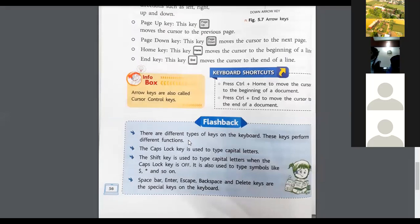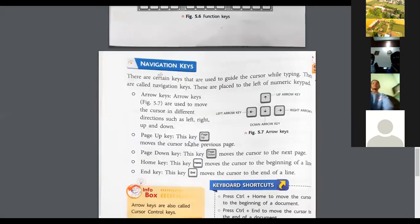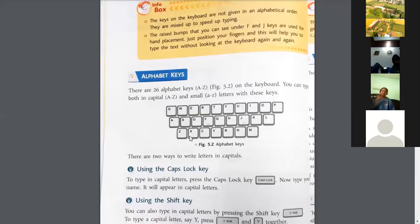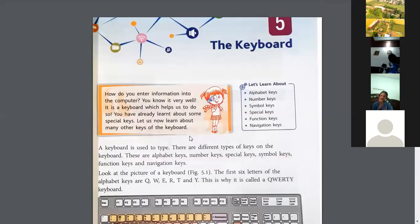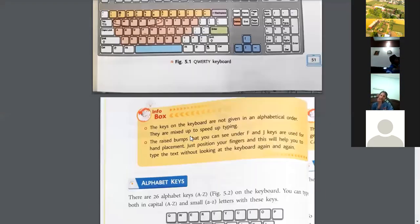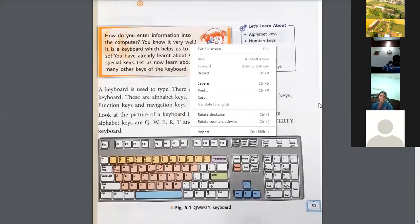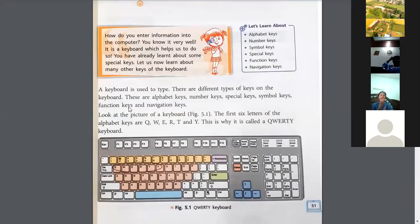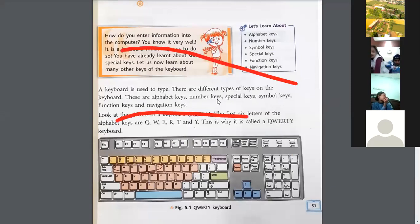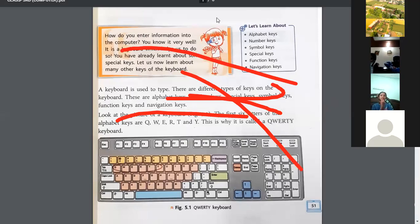These are the special keys on the keyboard. To summarize, the types of keys on the keyboard are: alphabet keys, number keys, special keys, symbol keys, function keys, and navigation keys.